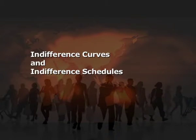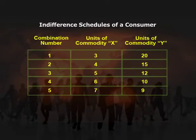Moving ahead with indifference curves and indifference curve schedules. Indifference curves measure utility ordinally and explain consumer behavior in terms of preferences for different combinations of goods. An indifference curve shows different combinations of goods that give the same level of utility to the consumer. This table shows the indifference schedule of a consumer for different combinations of two commodities X and Y, from which the consumer obtains equal level of satisfaction.